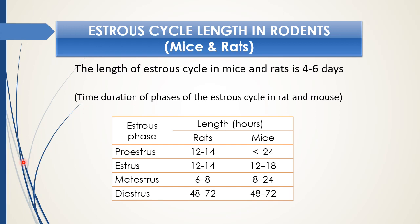In animals we can determine the timing of different phases — proestrus, estrus, metestrus, and diestrus — expressed in hours. In rat, proestrus is 12 to 14 hours; in mice it is about 24 hours. Estrus is 12 to 14 hours in rat and 12 to 18 hours in mice. Metestrus is a very short phase: 6 to 8 hours in rat and 8 to 24 hours in mice. Diestrus is the longest phase in the estrus cycle. It is very important to know about these different phases in many experimental situations when using animals in the laboratory.